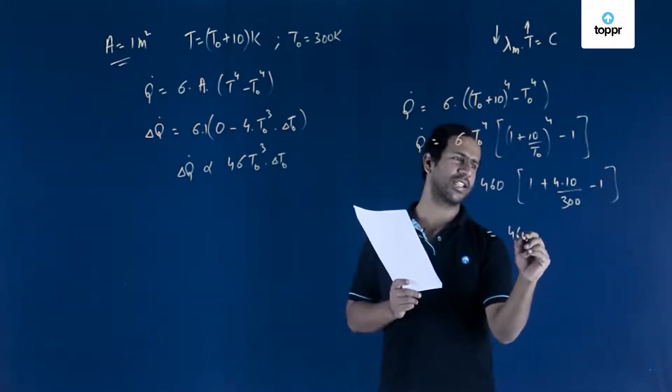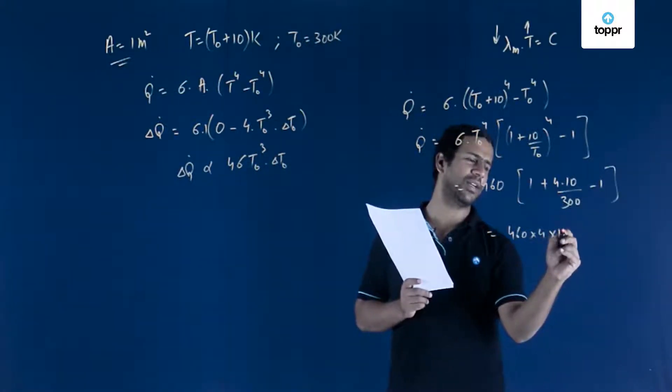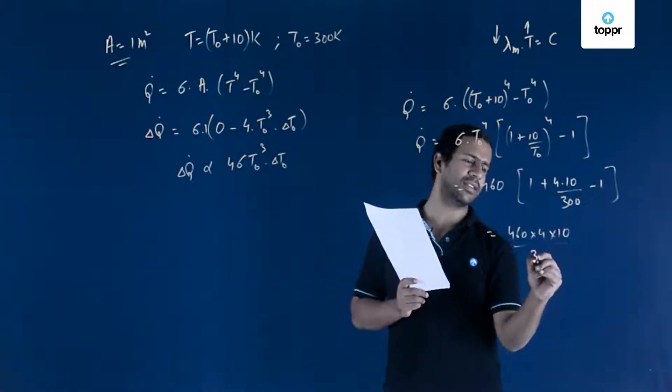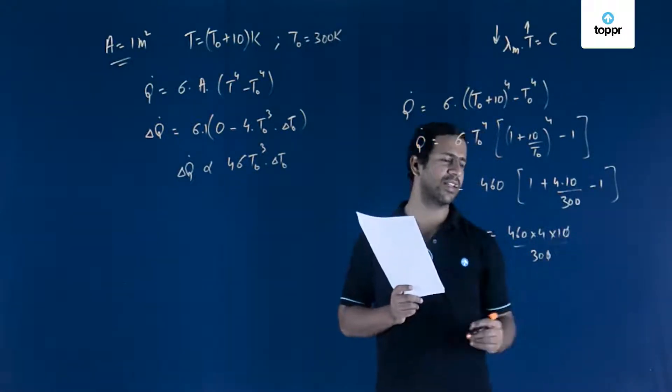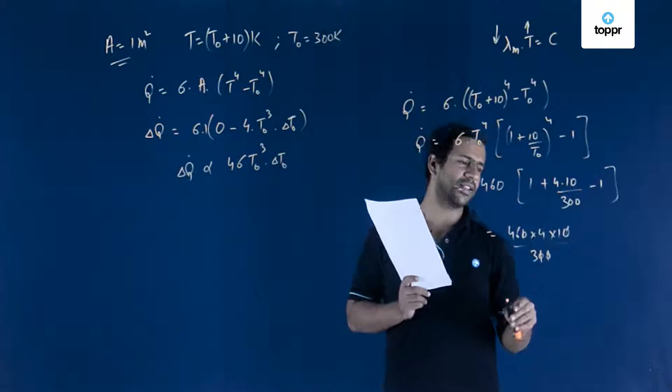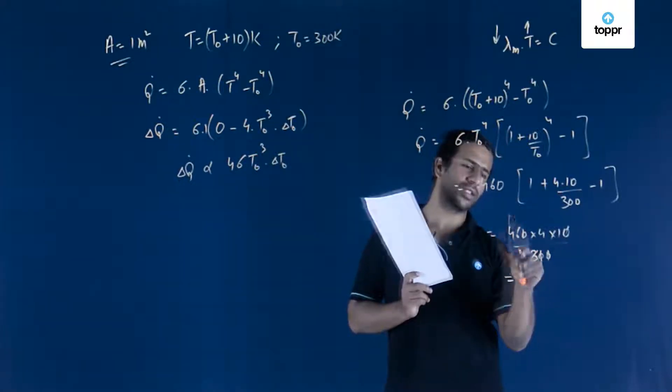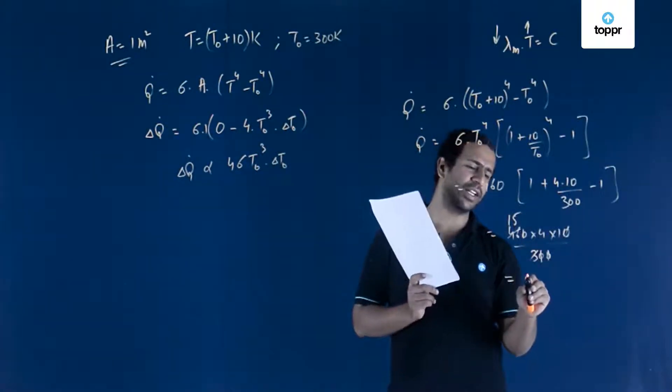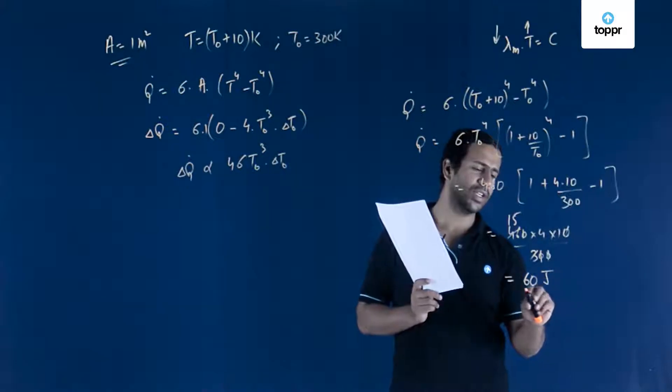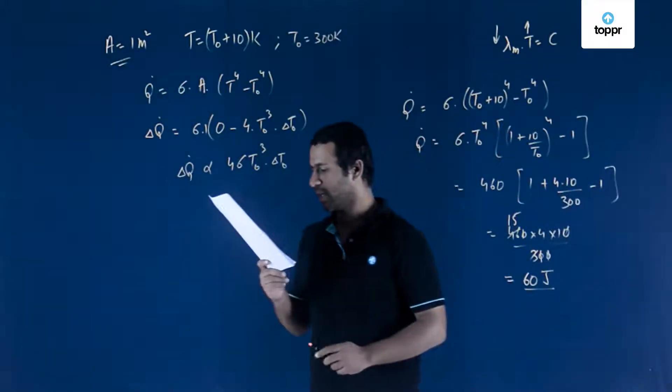You can cancel this out. You can cancel this as well. You can approximate this to 15, and 15 into 4 will give you 60 Joules. This will be the amount of heat radiated.